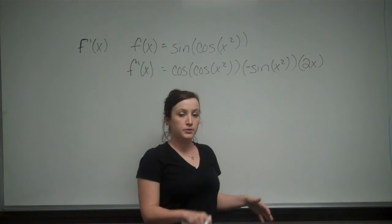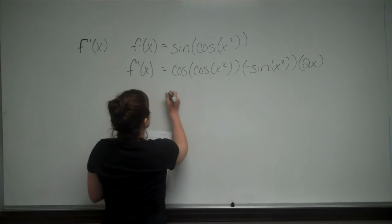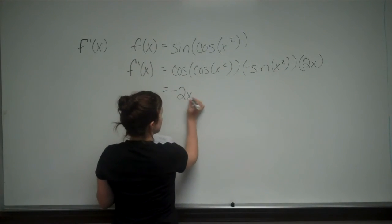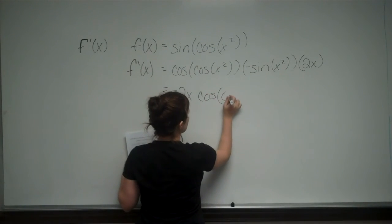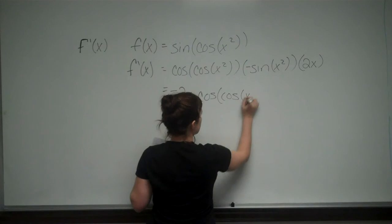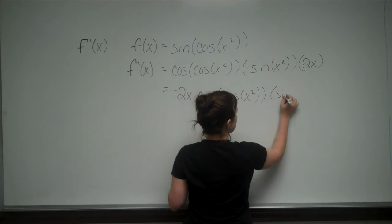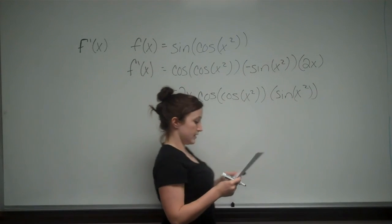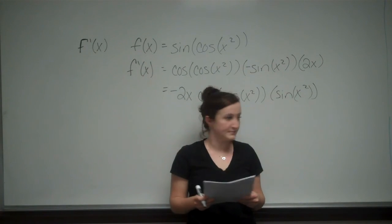We take the derivative of those, making sure we take the derivative of every inside term. That gives us negative 2x cosine of cosine of x squared times sine of x squared. And that is answer C.